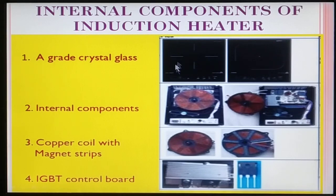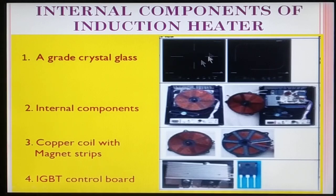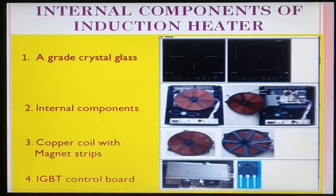There is a metallic part through which the magnetic field is inserted. There is a magnetic strip and a copper coil for current control. There is also a high frequency beam and a circuit board — a Hamilton circuit board.